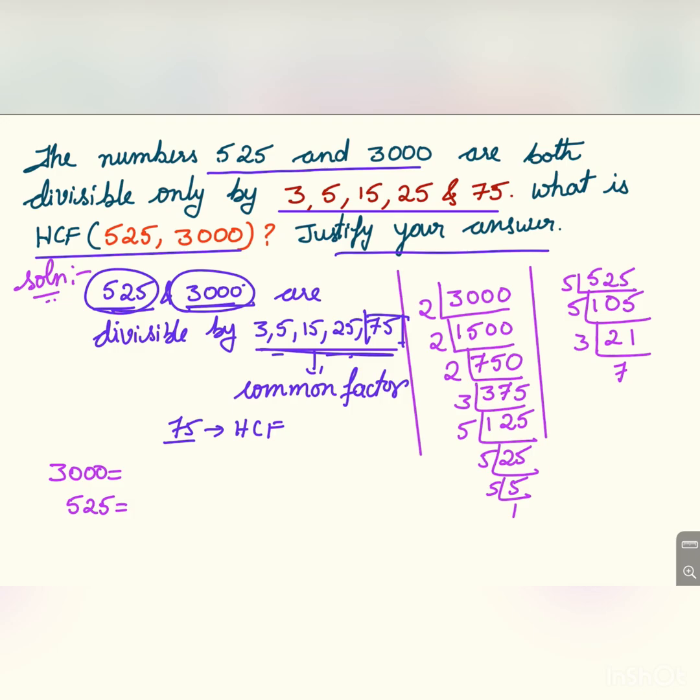Now they have asked whether it is correct or not. Justify your answer. For justification, we have to find out the prime factors of 3000.